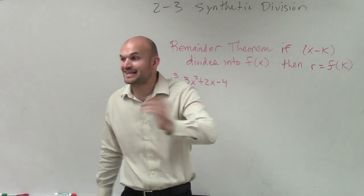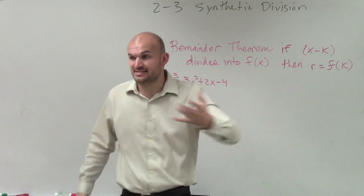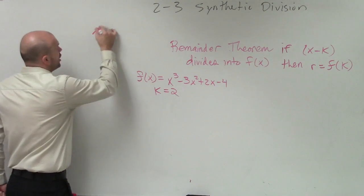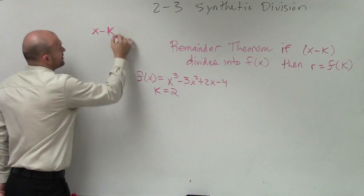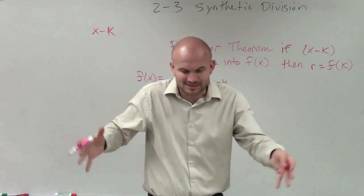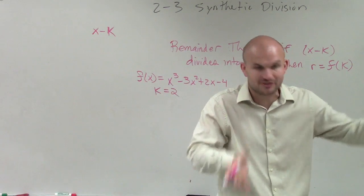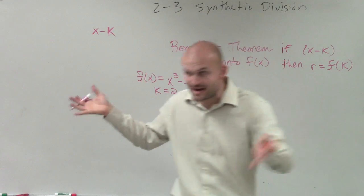Now remember, they just said x minus k is a factor, that's how we write a factor, and we know that all factors, the reason why we call them factors is because we factor it, so we have a factor times a factor times a factor equals zero. And then we can find all the zeros.